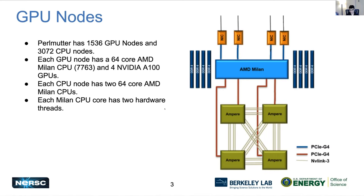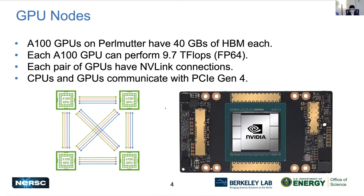The distinguishing factor is the GPUs. We have four NVIDIA A100 GPUs, and each of these GPUs has 40 GB of HBM — the high bandwidth memory — and is capable of performing up to 9.7 teraflops of double precision floating point operations. Each pair of GPUs on this node is connected with an NVLink connection, while the CPUs and GPUs communicate through a PCIe Gen 4 bus. So it's a highly performant node.